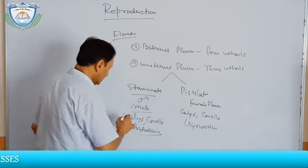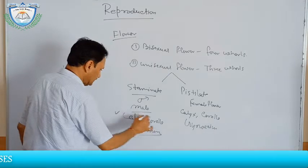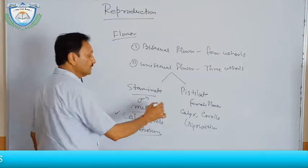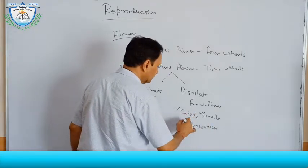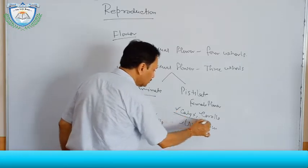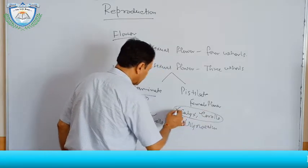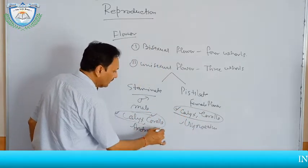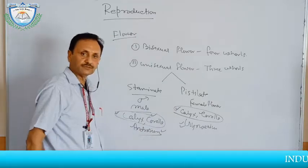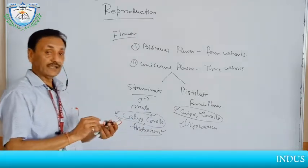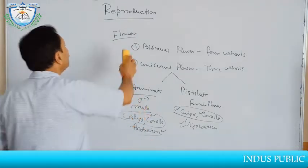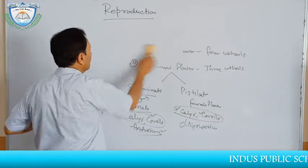So in both staminate and pistillate flowers there are three whorls each — two accessory whorls and only one essential whorl. But in the case of the bisexual flower, there are four whorls.